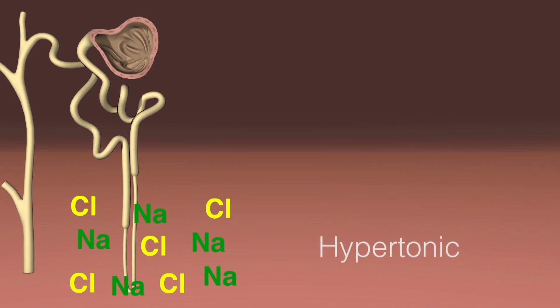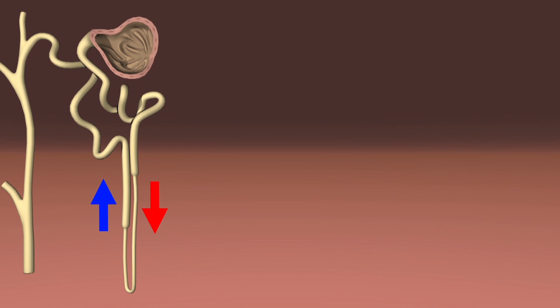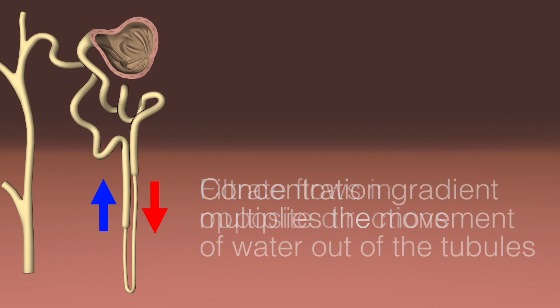Because the descending limb is very permeable to water, water leaves the descending tubule without expending any energy because it is following the concentration gradient. So it is called countercurrent because the filtrate flows in opposite directions, down the descending loop and back up the ascending loop. It is called a multiplier because the active pumping of ions out of the ascending tubule multiplies the amount of water that is reabsorbed from the descending tubule. As more water is pumped out, the filtrate becomes more and more concentrated.